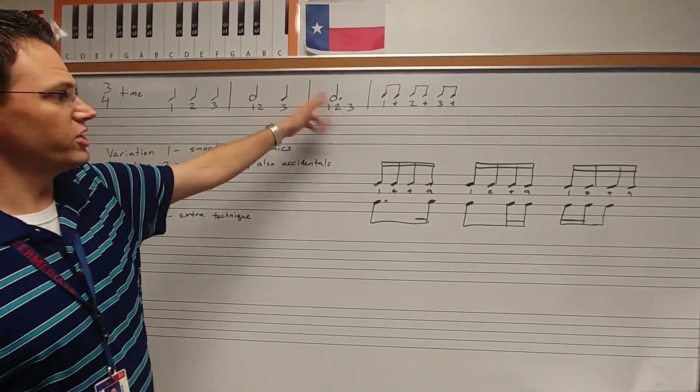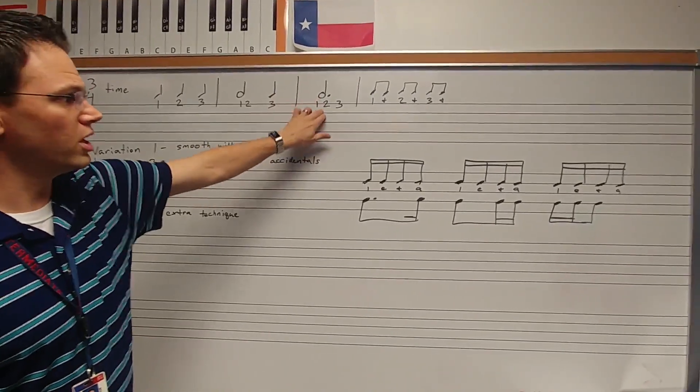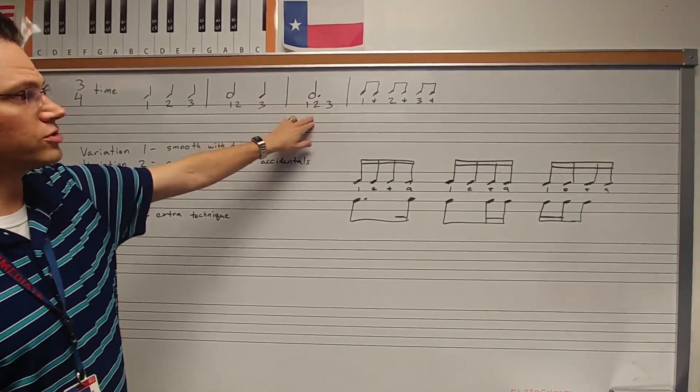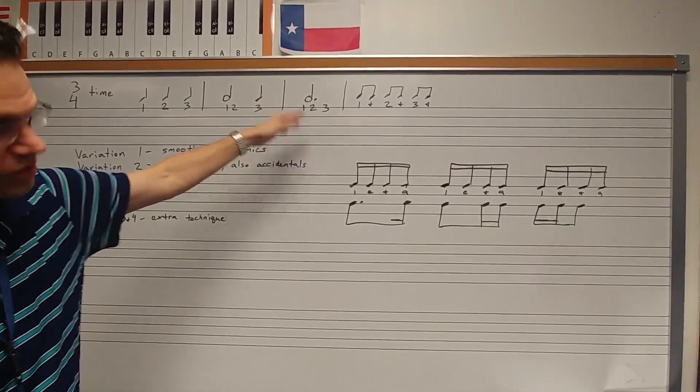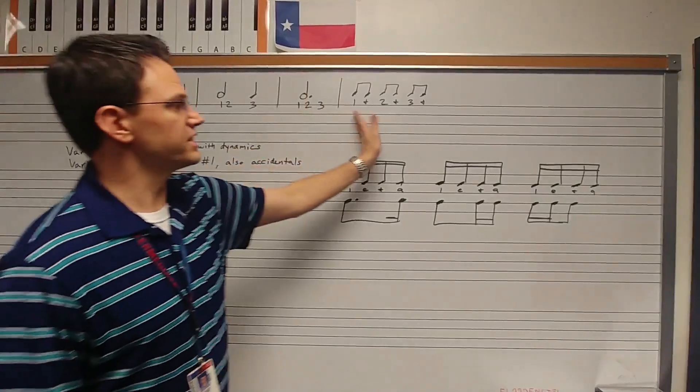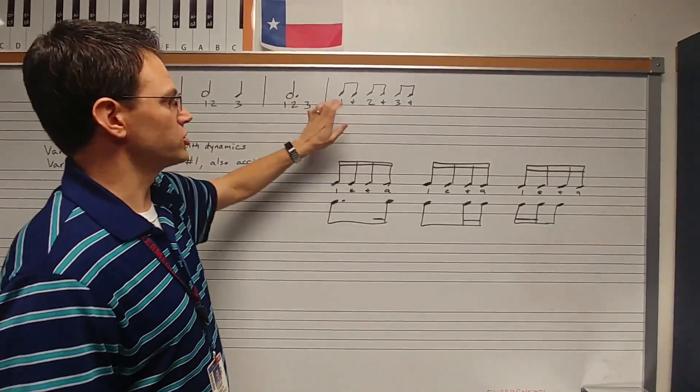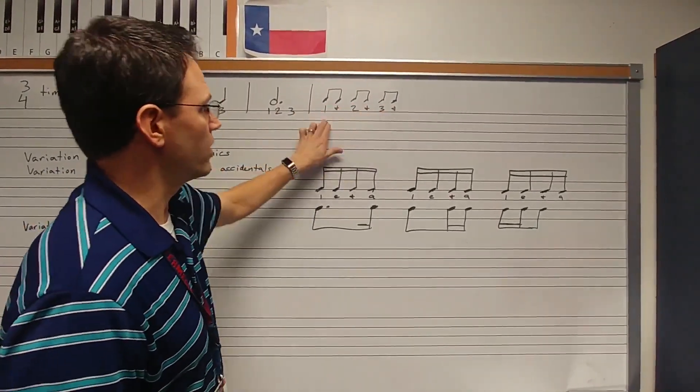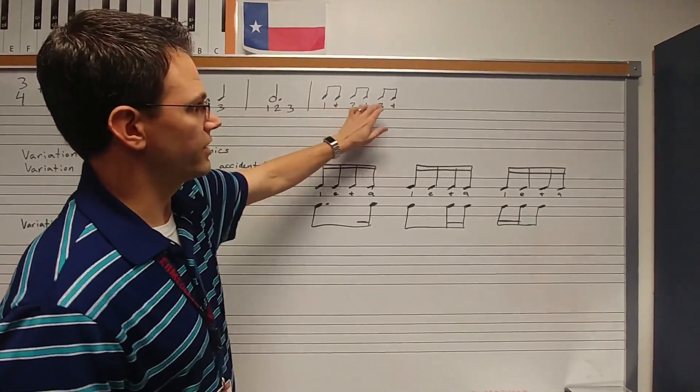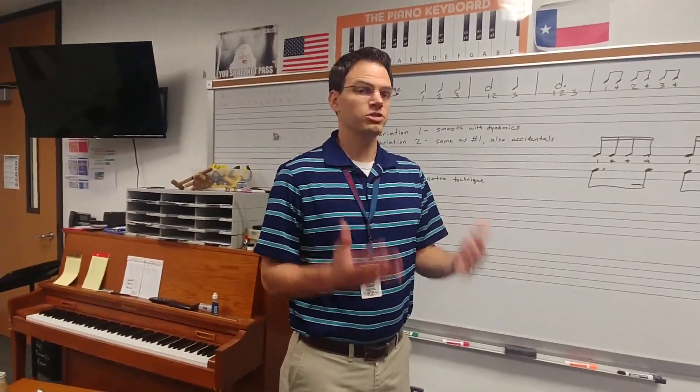We may have a dotted half note, which is going to fill up the measure. Or we may see a measure of eighth notes — one and two and three and. There are lots of varieties for how these can be mixed up, so just do your best. Make sure you spend some time counting and clapping, especially if you aren't used to playing in three-four time.